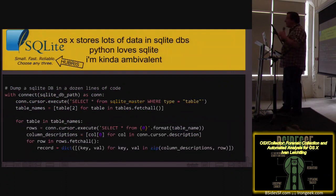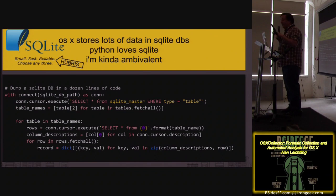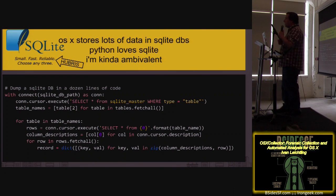OSX stores lots of its data in SQLite DBs. Python is really good at dealing with SQLite DBs, so this was a win. One thing I found out: the tagline for SQLite is 'small, fast, reliable, choose any three.' This is the code you'd need in Python to take a SQLite DB file, dump all of the tables, and get all the data — it's pretty damn simple.